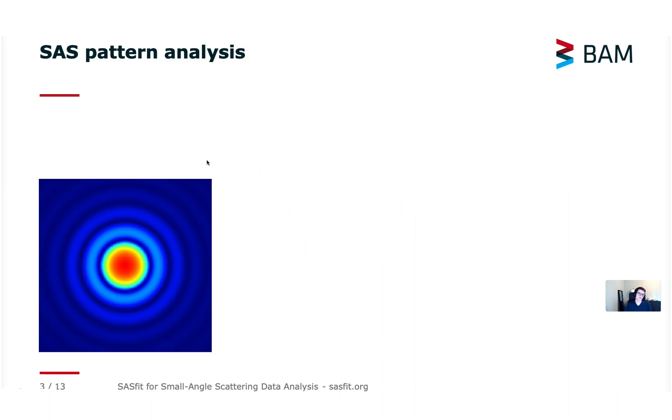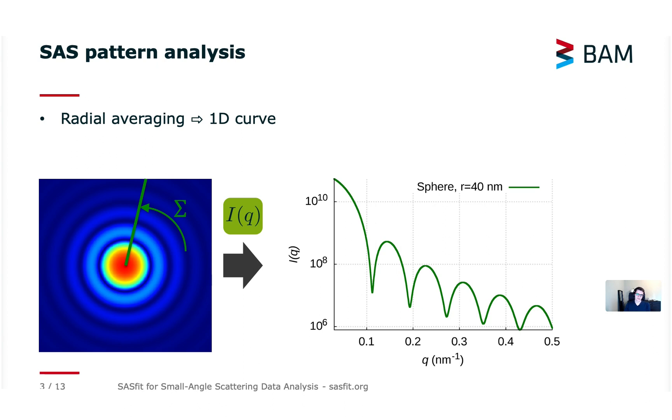There are different ways to look at the two-dimensional pattern which is measured on small angle scattering instruments. The most common approach here is one-dimensional fitting. To get a one-dimensional curve from a two-dimensional image, we can do radial averaging for example, which is shown here on the left side. This produces a one-dimensional curve as shown here on the right side of a spherical scatterer for example.